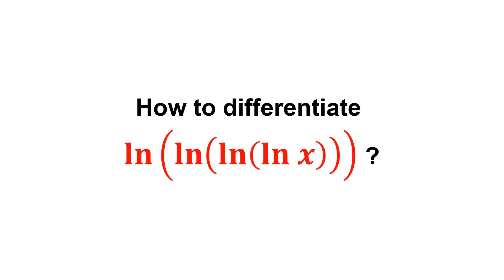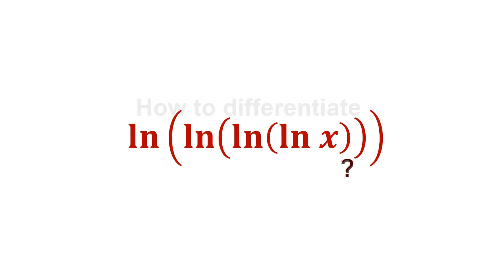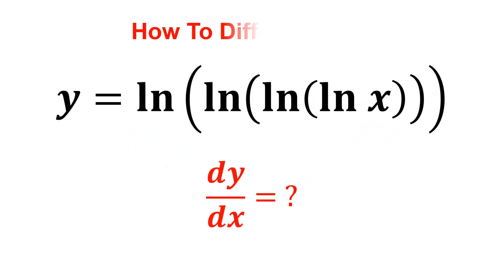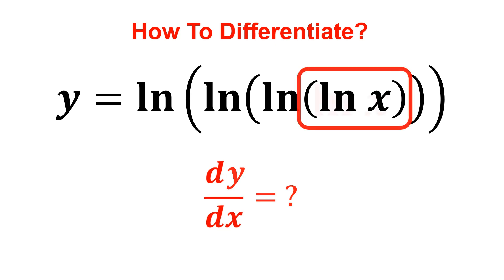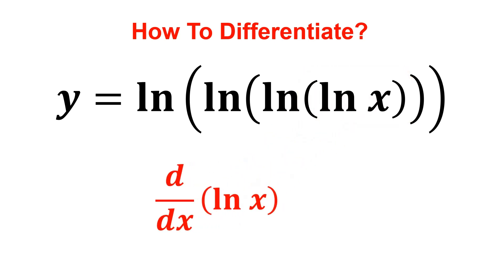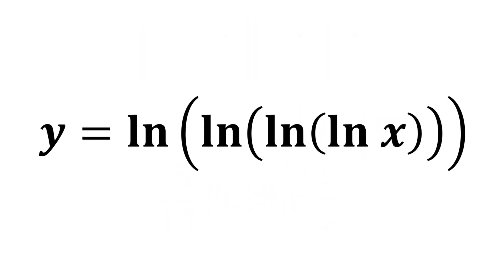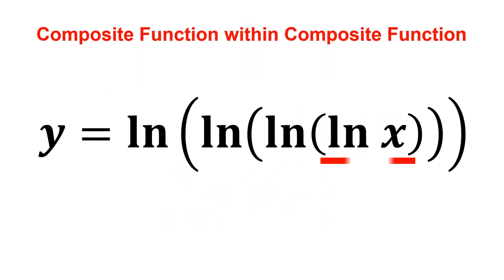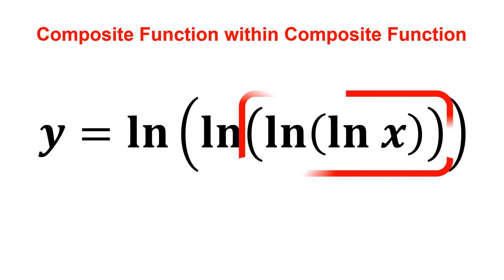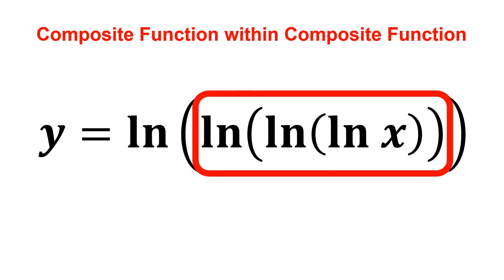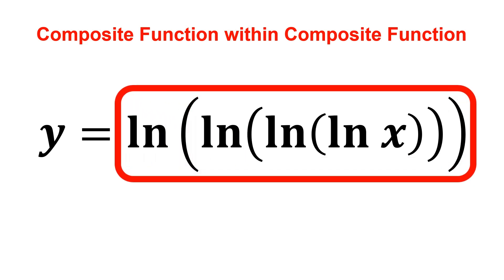How do we differentiate natural log of natural log of natural log of natural log of x? We know that ln x has derivative 1 over x. But here, we have ln x nested inside a natural log, nested inside another natural log, and nested inside yet another natural log.